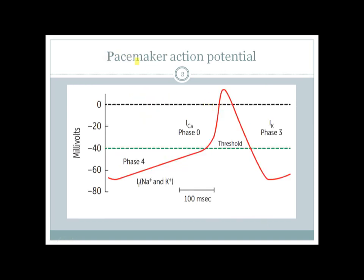Now let's look at the action potential of pacemaker tissues like the SA node. The SA node has a resting membrane potential lower than cardiac muscle, around minus 62 to minus 70 millivolts. It does not have phase one or phase two — both are absent in pacemaker tissue. What it does have is phase four, phase zero, and phase three.